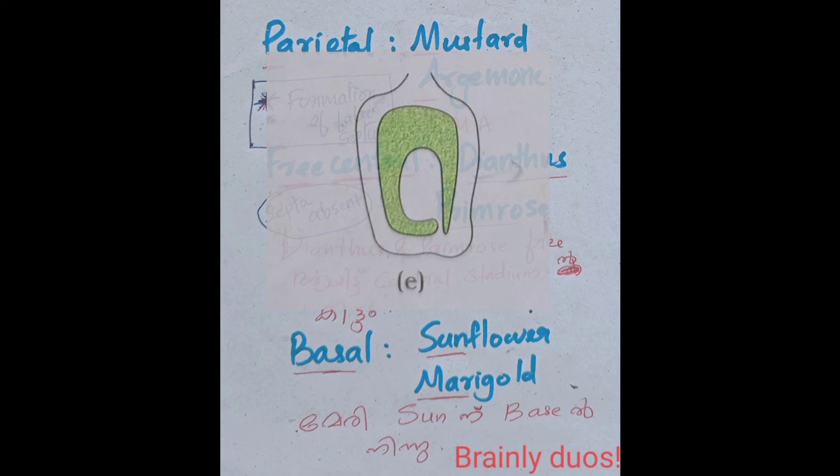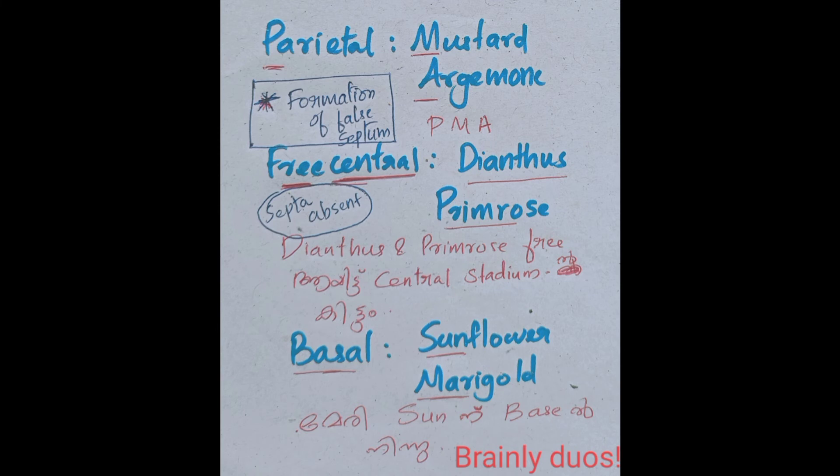Example is sunflower, marigold. Basal placentation example is sunflower, marigold. The code is marigold, sunflower, basal placentation. This is placentation.